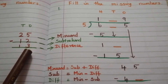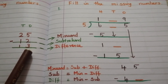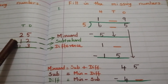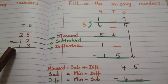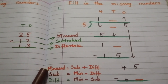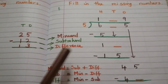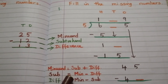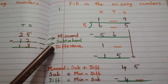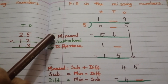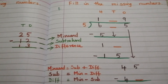Let us take this simple subtraction problem. The top number 25 is the minuend, the bottom number 12 is the subtrahend, and the answer 13 is the difference. To find the minuend, we add subtrahend and difference. Subtrahend equals minuend minus difference, and difference equals minuend minus subtrahend.